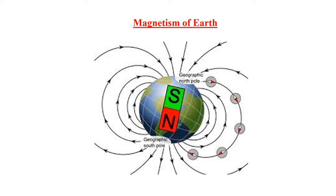Dynamo effect is caused by the motion of metallic fluids in the outer core of the earth which results in electric current. It is because of this electric current that the earth has its own magnetic field lines.